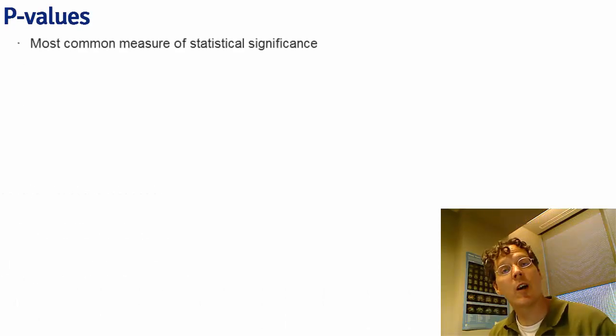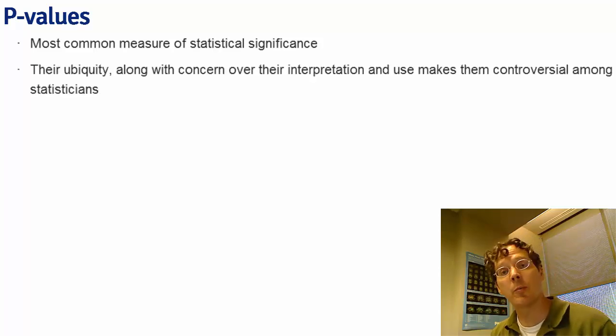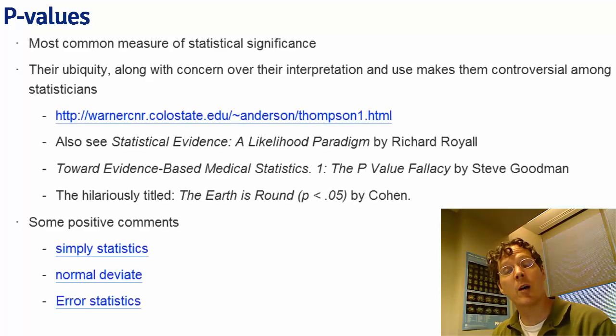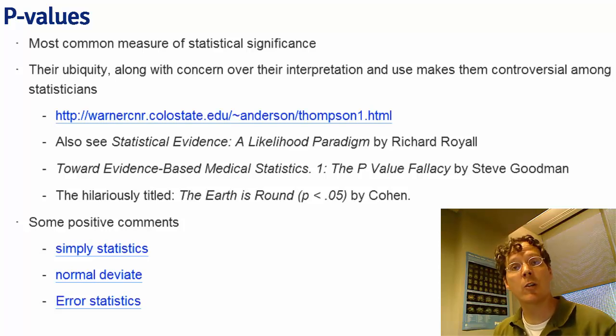P-values are the most common measure of statistical significance. Basically, every statistical software that performs a hypothesis test outputs a p-value for you. Because they're so popular and because often they get misinterpreted, they're quite controversial among statisticians. I give here some comments both in favor of and some papers and commentaries against p-values. In this class, we're not going to focus too much on these controversies but instead are just going to focus on how do you generate a p-value and how do you correctly interpret it.